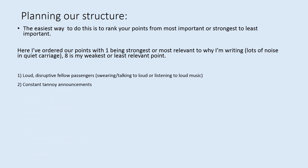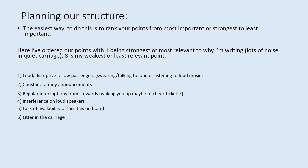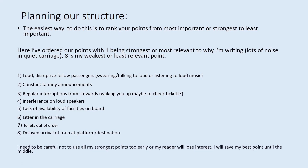If we're planning our structure and how we're going to order our arguments, since we've got quite a lot of points to cover, we want to think about ranking our points from the most important or strongest argument to the least important. I've ordered our points from one being the strongest and most relevant to the least relevant or weakest point. The most important point is about the loud disruptive fellow passengers, followed by the tannoy announcements, then less relevant points like stewards interrupting you, interference on loudspeakers, lack of facilities, litter in the carriage and toilets out of order. We need to be careful not to use all of our strongest points too early in the letter, otherwise the reader will lose interest.